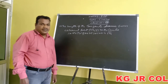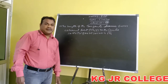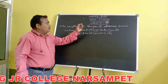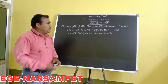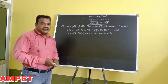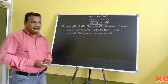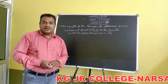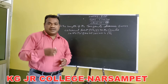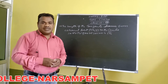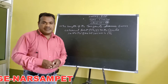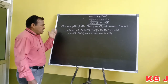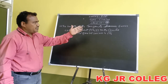Welcome to online classes for second year students. Today's topic is circles, class number 13. In class number 12, we discussed the position of a point and the power of the point with respect to the circle. Today we explain the length of the tangents.